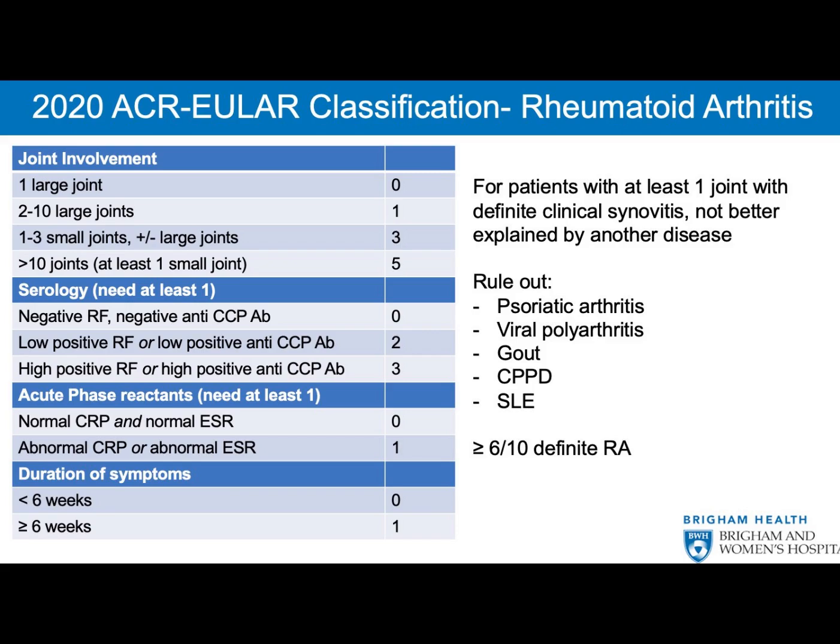Category 3 — Duration of Symptoms (0 to 1 point): Symptoms lasting less than six weeks score 0 points. Symptoms lasting six weeks or more score 1 point.